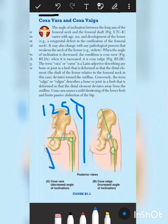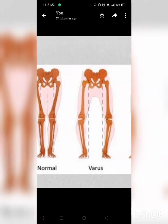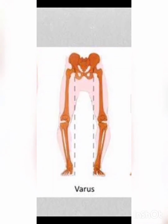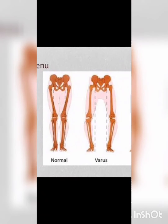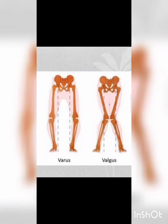If we talk about the neck-shaft angle, it varies with sex and age, and also varies in rickets. In rickets, the femoral neck is weak. In the coxa vara condition, we have limb shortening and abduction is limited. In the valgus condition, the distal element is deviated from the midline.